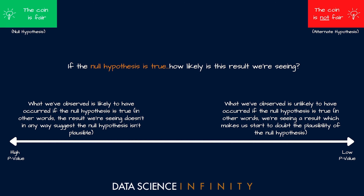Conversely, if we see a low p-value, what we're observing is unlikely to have occurred if the null hypothesis is true — we're seeing a result which makes us start to doubt the plausibility of the null hypothesis. An example is when Pete had rolled five heads in a row: this seemed pretty unlikely with a fair coin and started to make us doubt the validity of that statement. Whether we formally reject or fail to reject the null hypothesis depends upon where we place our acceptance criteria.